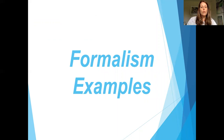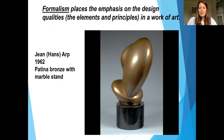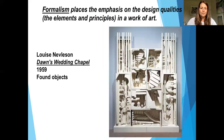Our second category is formalism. Formalism is going to be completely opposite of imitationalism — it really stresses the design over everything else. We're not worried about the meaning, the message, or even the subject; we're just stressing those elements and principles in a work of art. Here is a piece by Jan Arp created in 1962. When I look at this sculpture, I really see an organic form and a bronze color. I have a hard time figuring out what the subject is or if there's a meaning behind it, but the artist is really just trying to capture an organic form, focusing purely on design.